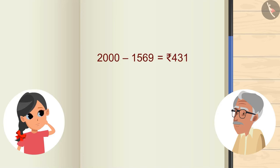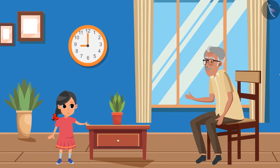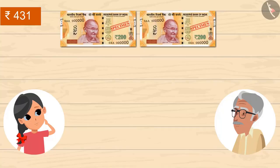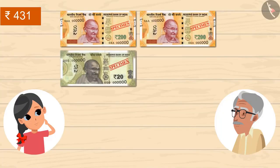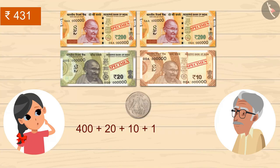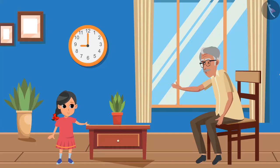Gudi is delighted — it worked with just one note! Grandpa then asks how to make 431 rupees in change. Gudi works it out: 2 notes of 200, 1 note of 20, 1 note of 10, and 1 coin of 1 rupee. So 400 plus 20 plus 10 plus 1 equals 431 rupees. Grandpa confirms this is absolutely right.